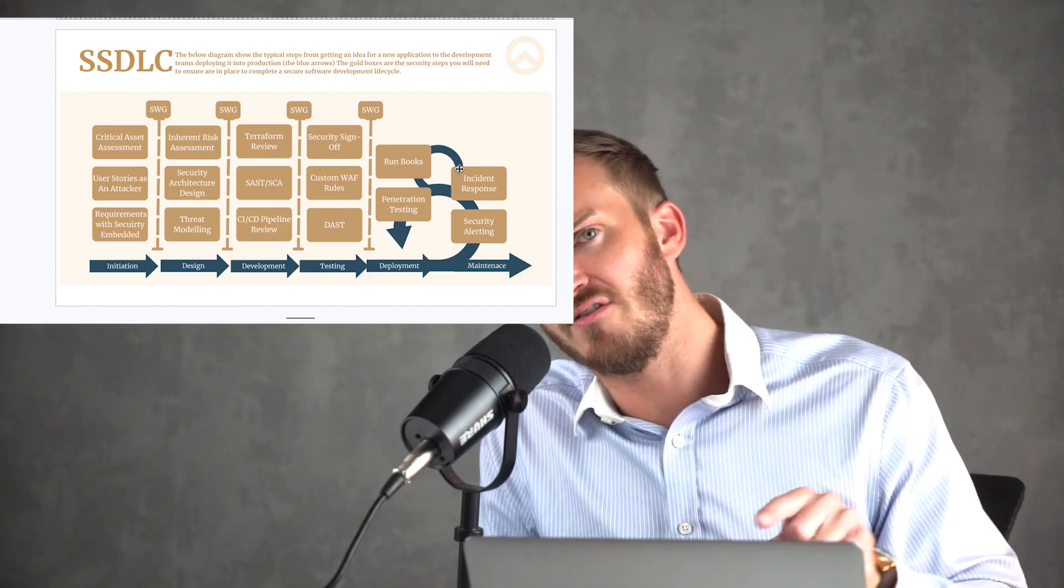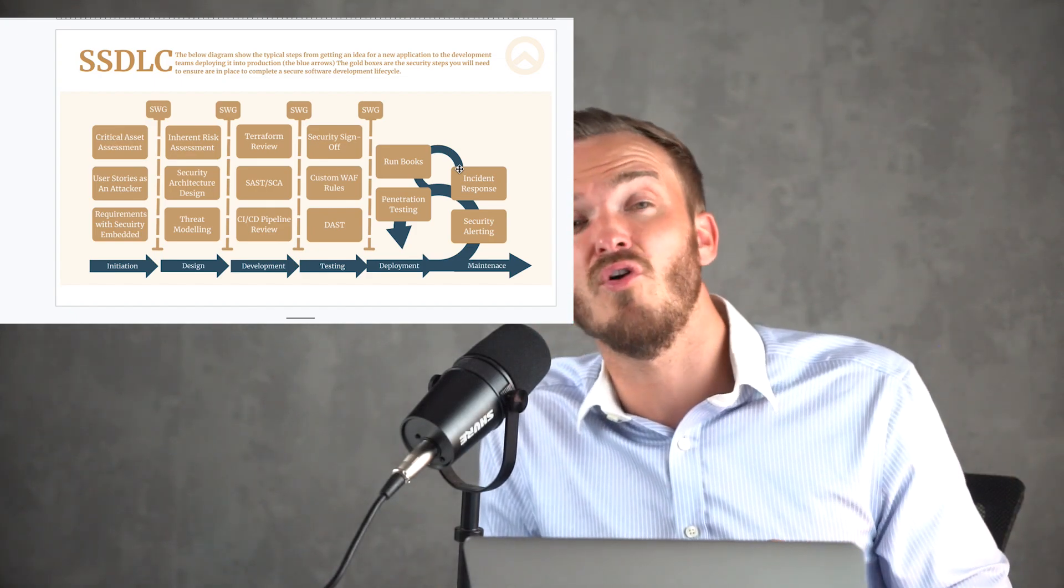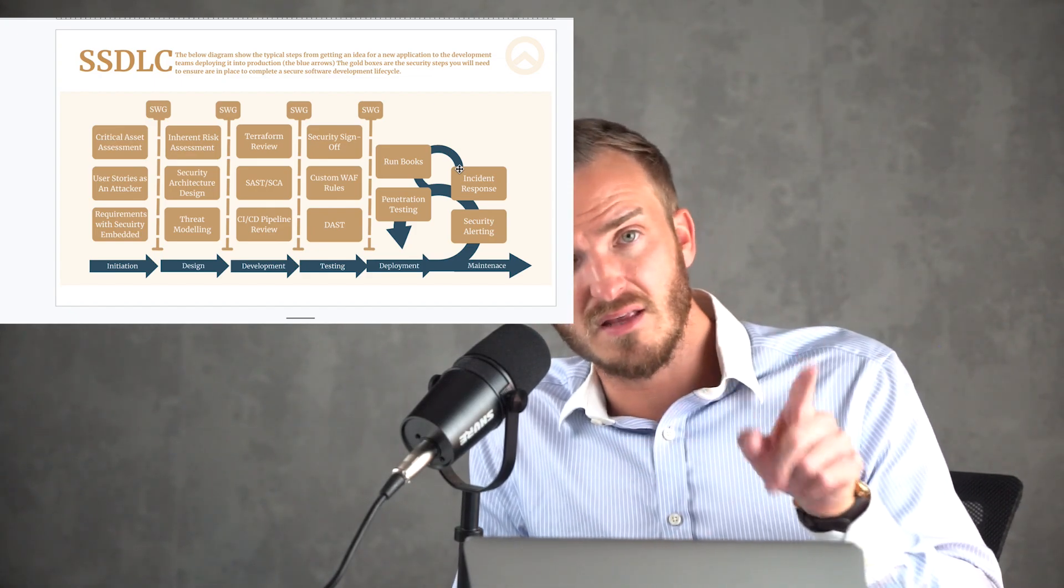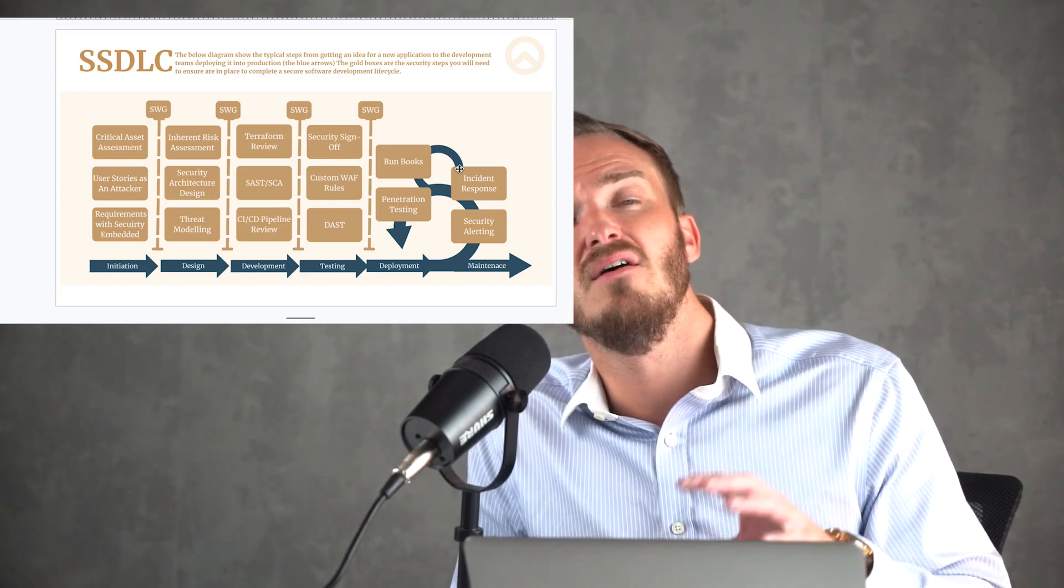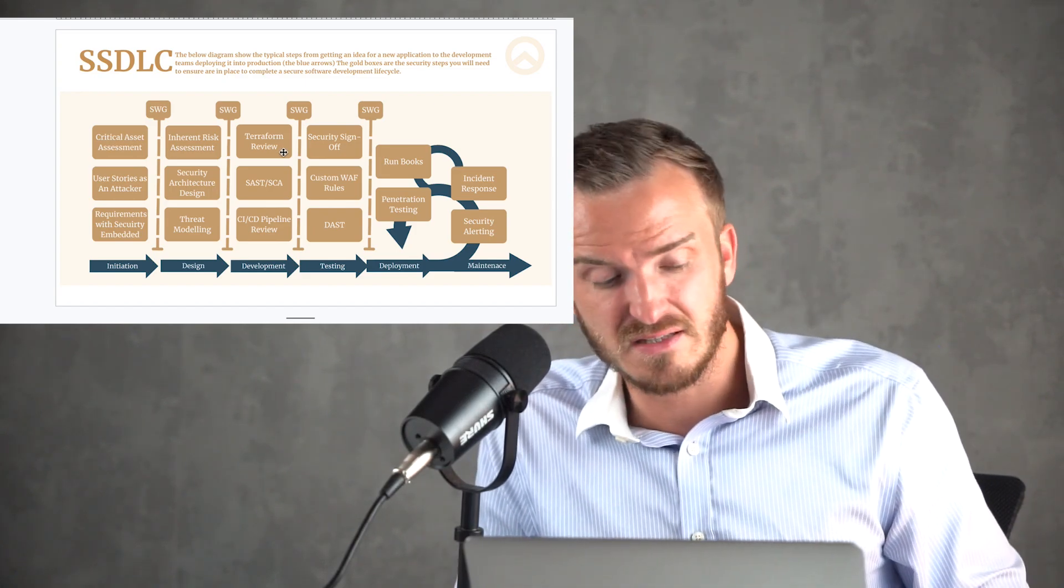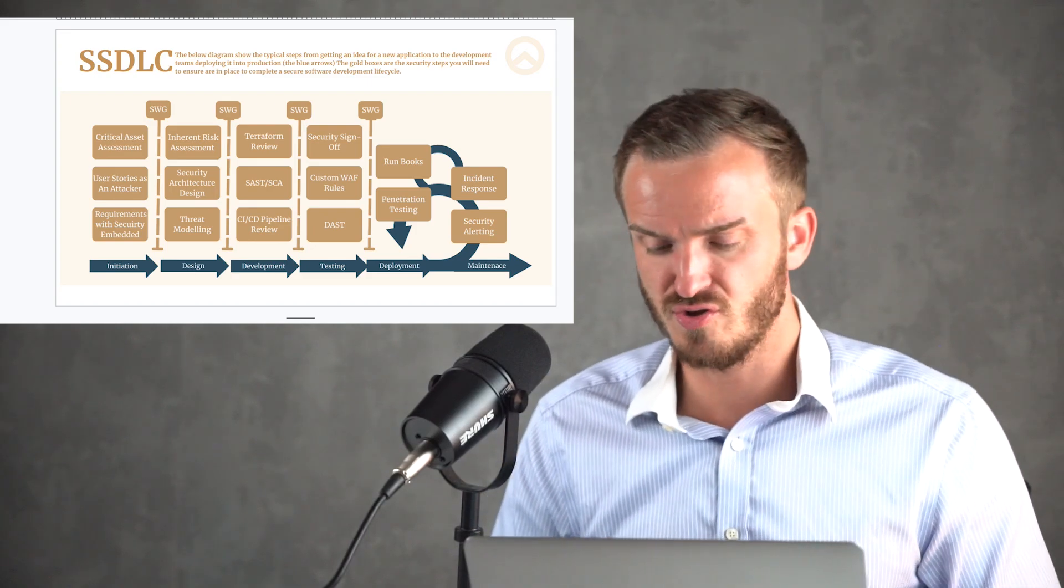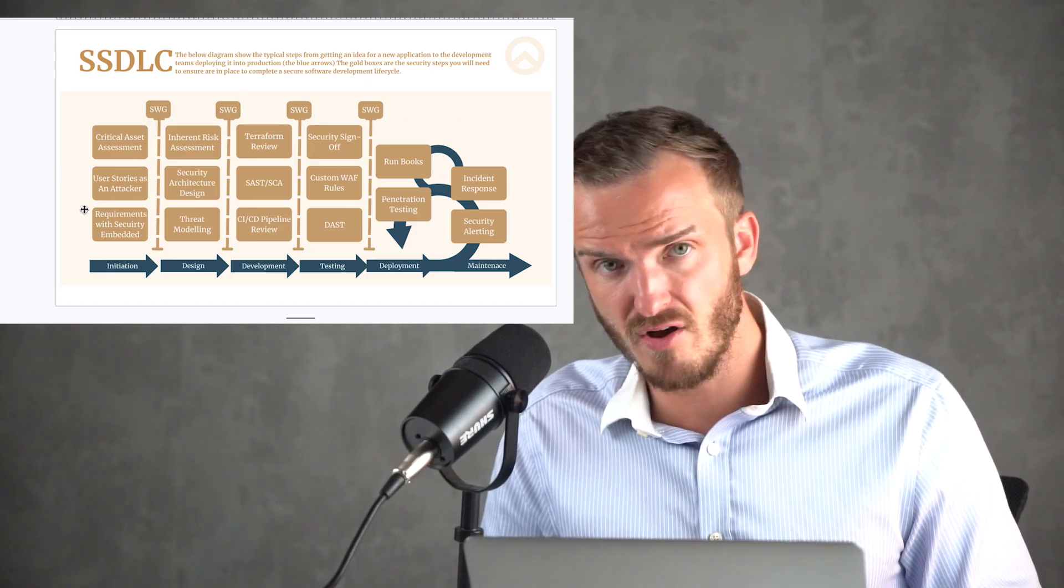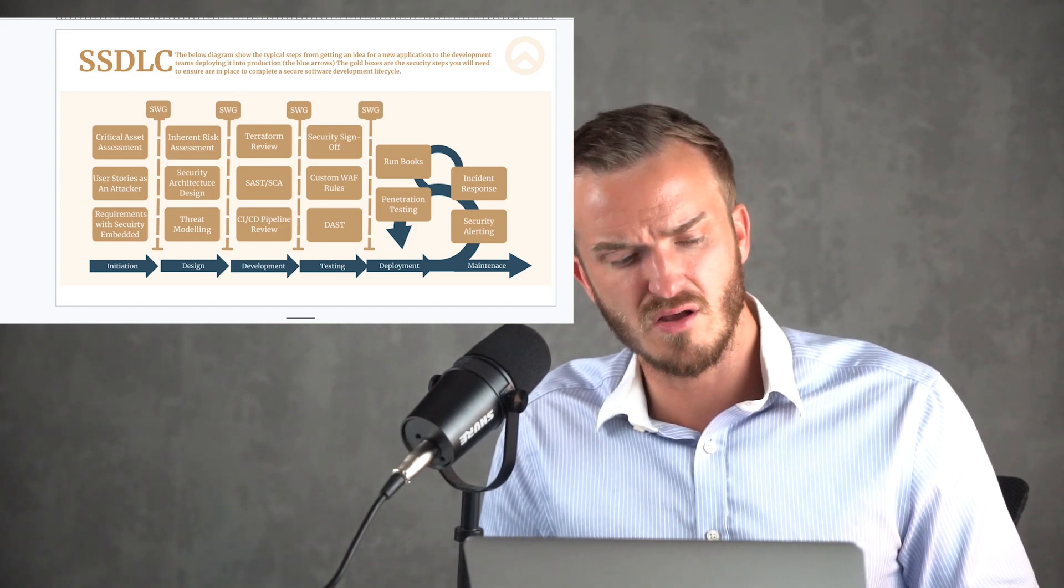That is our secure software development lifecycle when building a new product. We automate this as much as we can. Once the product's built, we try and integrate these things, or we might do some things on an annual basis. That's the secure software development lifecycle. Use this, create your own version of this, or follow this one when you go into companies.